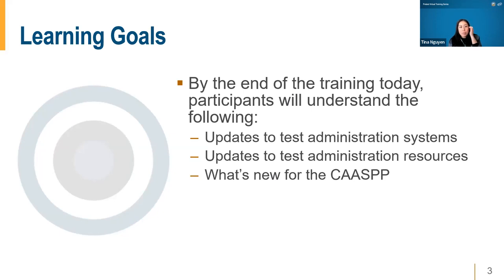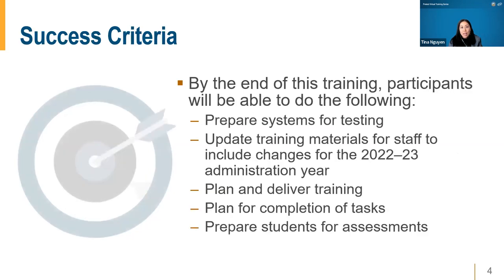Let's review our learning goals. By the end of today's training, participants will be able to understand updates to the test administration system, updates to test administration resources, and what's new for the CAASPP. This is a highly requested training focused only on what's new, with important reminders throughout. By the end of training, participants will be able to prepare systems for testing, update training materials for staff, plan and deliver training on administering the CAASPP, and plan for the completion of tasks.